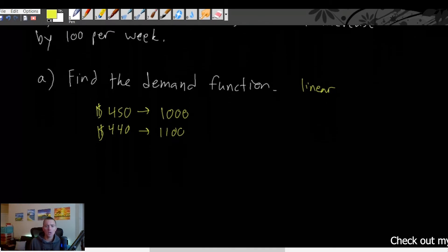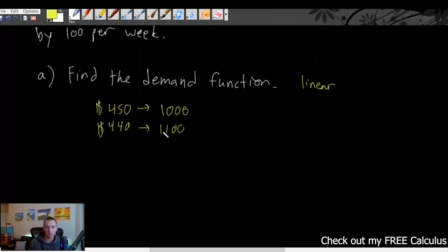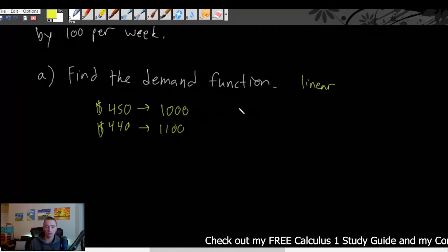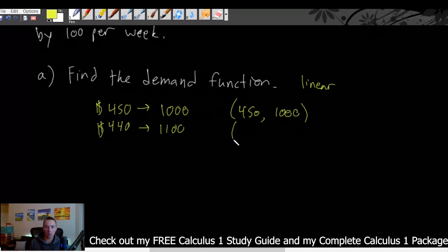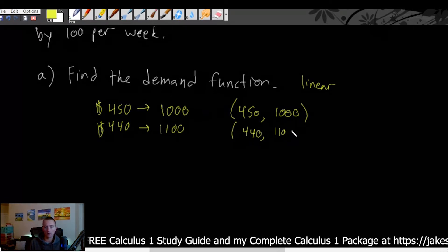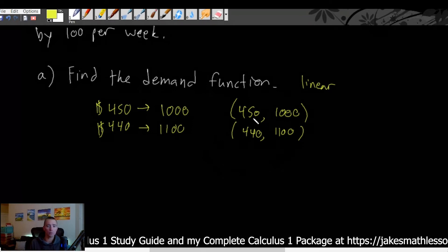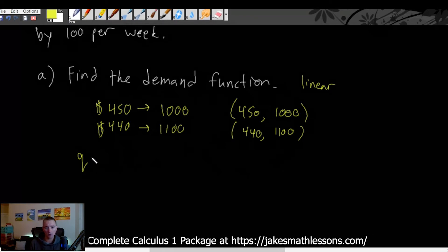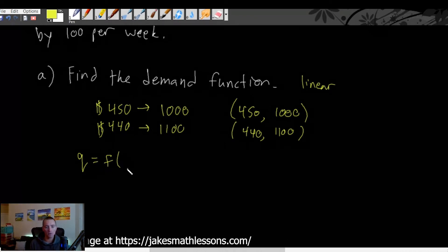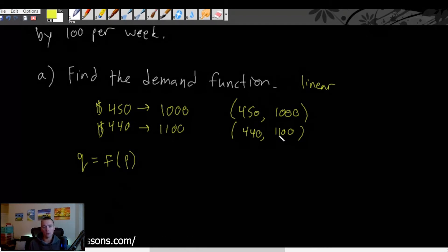We can think of these as points: $450 and 1000 as input and output, and $440 and 1100 as input and output. These two points lie on our demand function. A demand function always outputs quantity — the number of things we're going to sell — and it's always a function of price. So price is our input and quantity is our output.